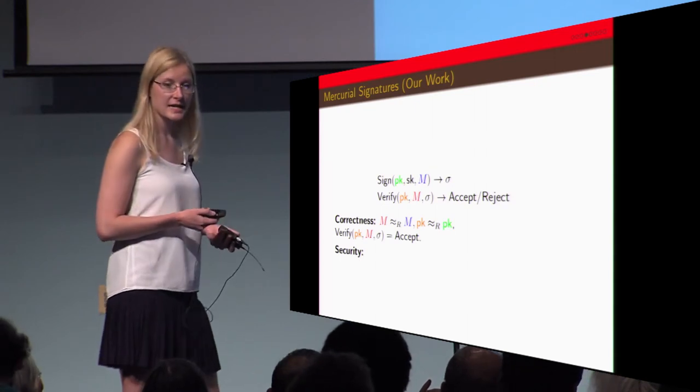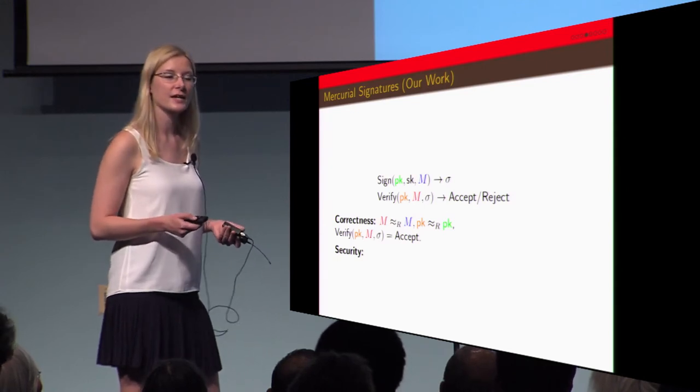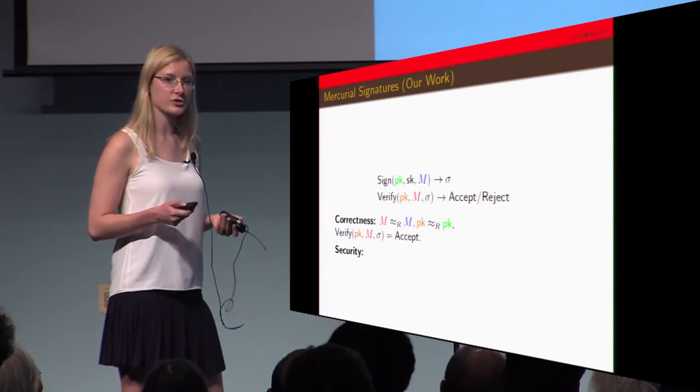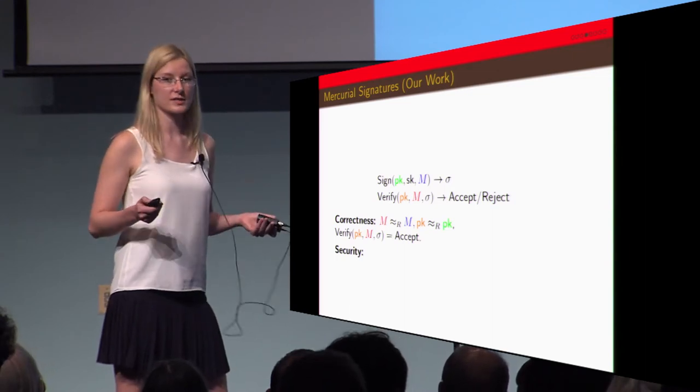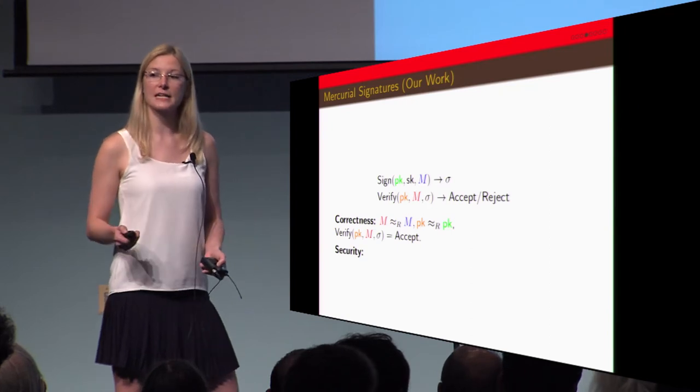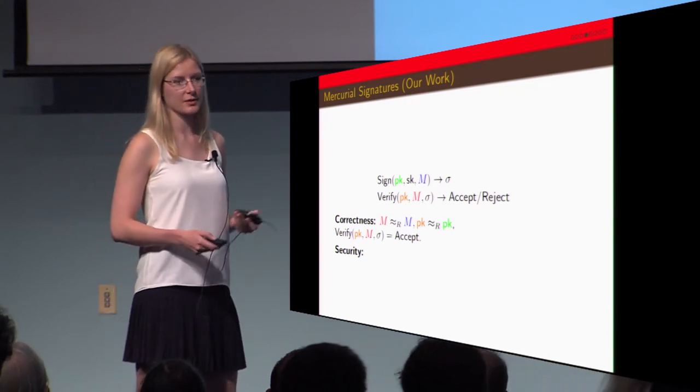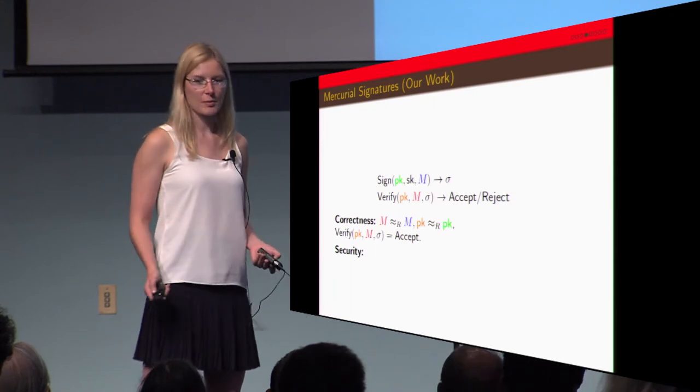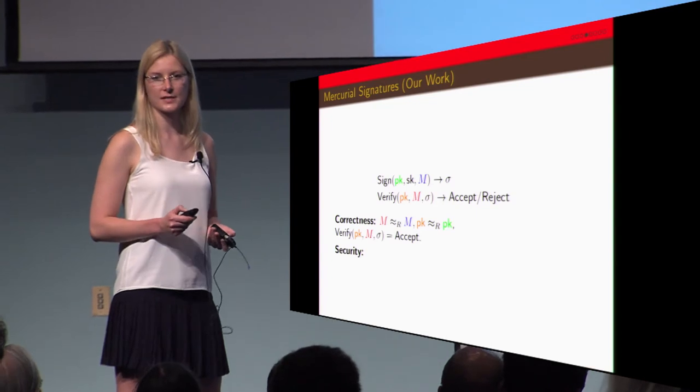In this case an adversary has a successful forgery if the forged message, again as in the previous slide, is not in any equivalence class that's already been signed. But the public key does have to be in the same equivalence class as the original public key. Otherwise it's kind of trivial. You can come up with different public keys and messages that still verify. So the public key does have to be in the same equivalence class.